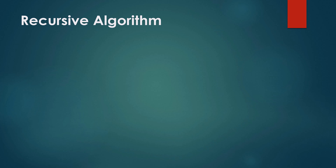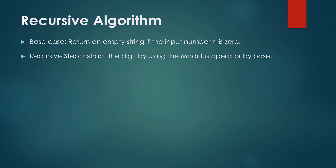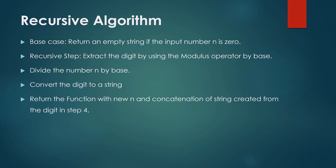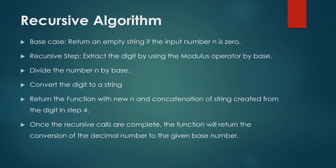Now let's discuss the recursive algorithm. The recursive algorithm starts with the base case: return an empty string if the input number n is 0. Then comes the recursive step: extract a digit using the modulus operator by base, where base is the number between 2 to 36. Divide the number n by the base. Convert the digit to a string. Return the function with the new n — calculated by dividing by the base — and concatenate the string created from the digit with the recursive function call itself, until it reaches the base case. Once the recursive calls are complete, the function will return the conversion of the decimal number to the given base.